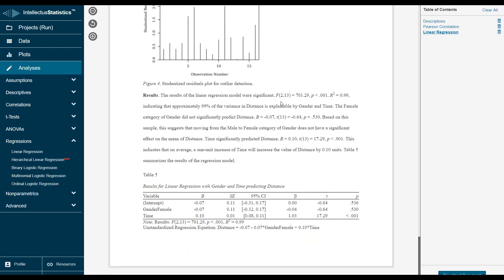Here's the model fit, here's the p-value, and here's the R-square indicating 99% of the variance in distance is explainable by gender and time.